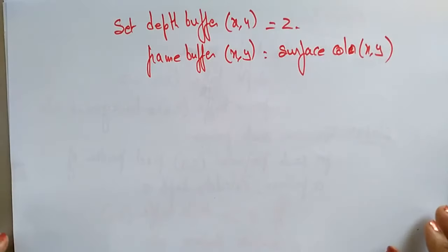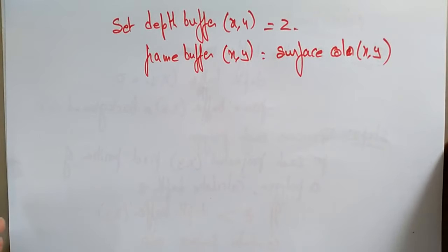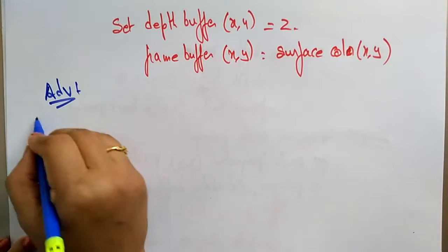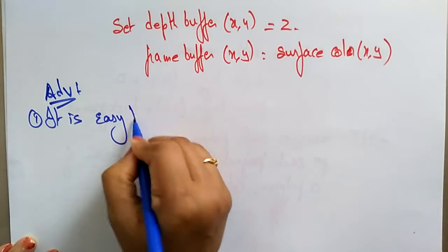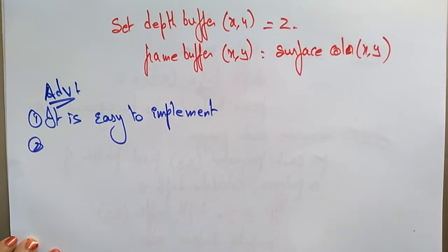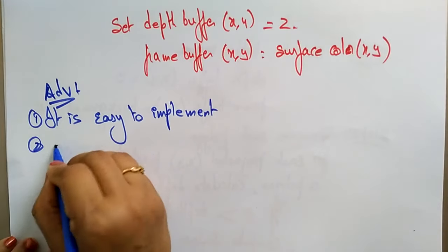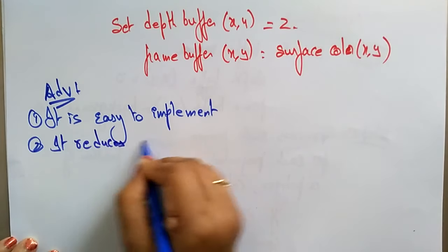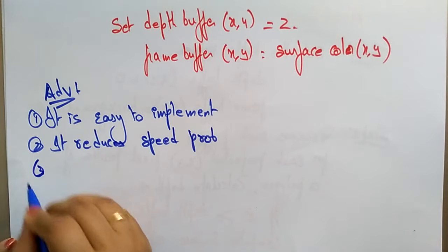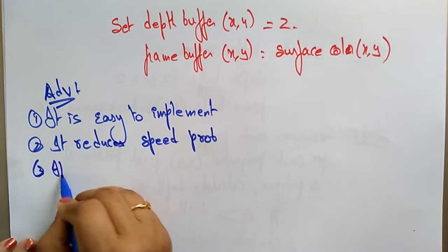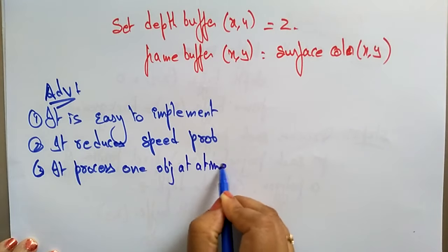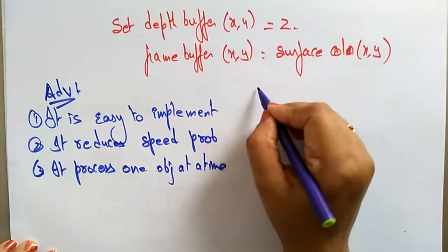The advantages of the Z-buffer method are: it is easy to implement, it reduces speed problems if implemented in hardware, and it processes one object at a time.